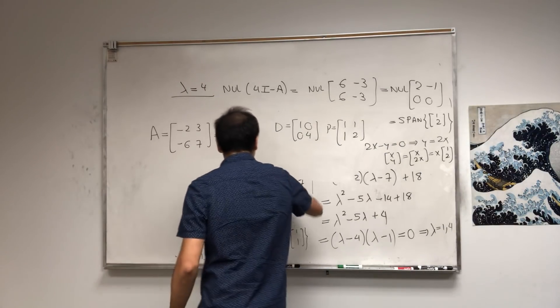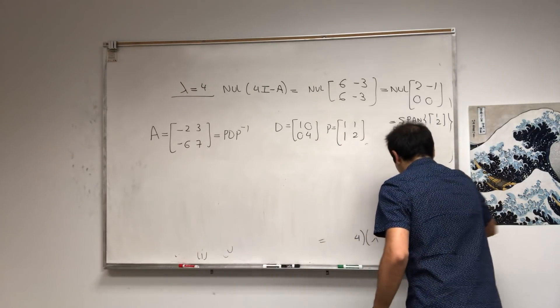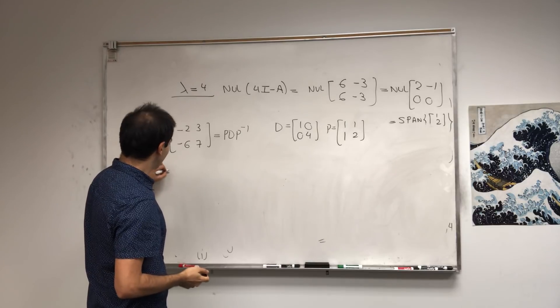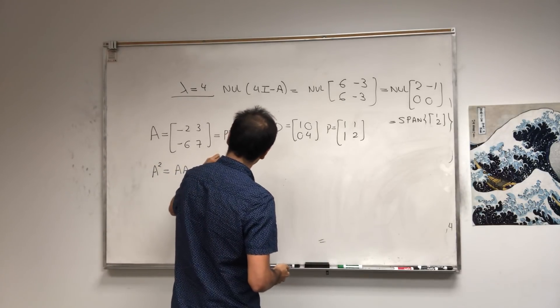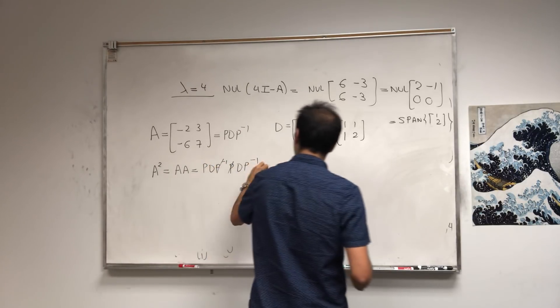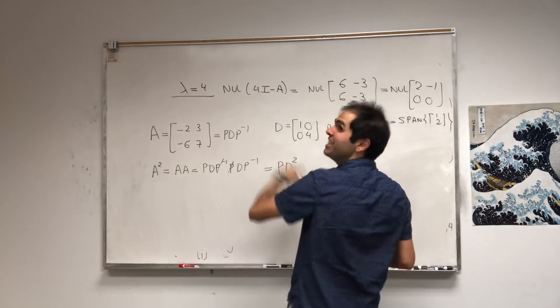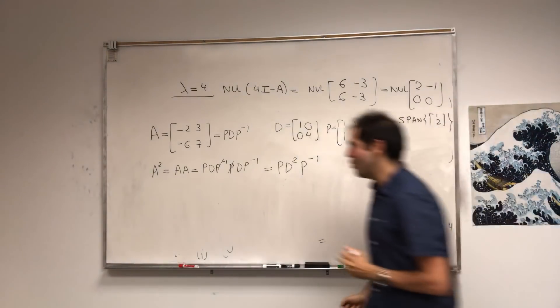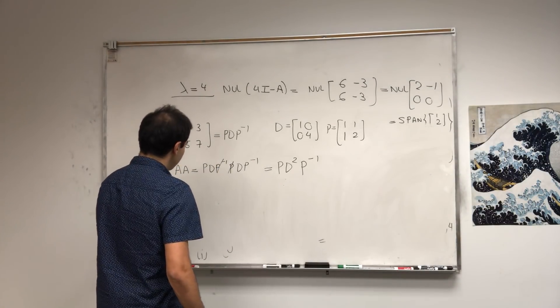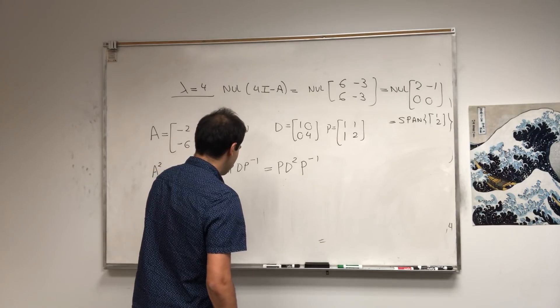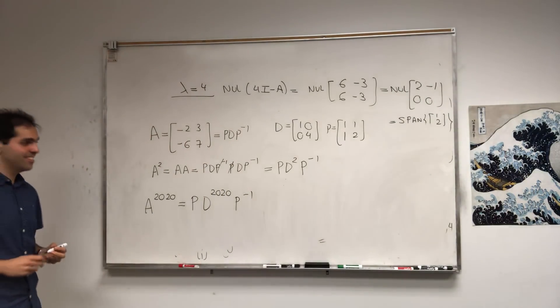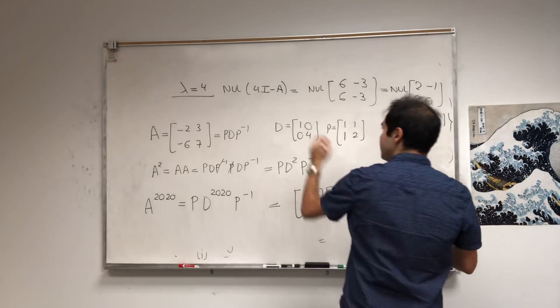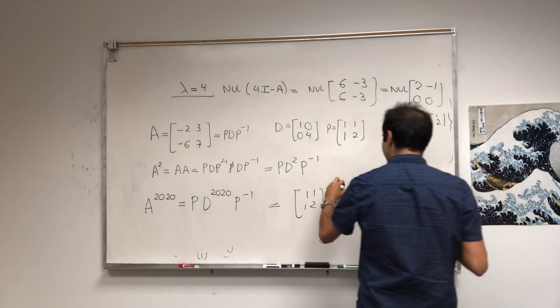Why is this useful? If A = PDP^(-1), then A² = PDP^(-1)PDP^(-1). This cancels to PD²P^(-1). So A^2020 will be PD^2020P^(-1). That's a lot of Ds - 2020 Ds! But the cool thing is D^N is easy to calculate.